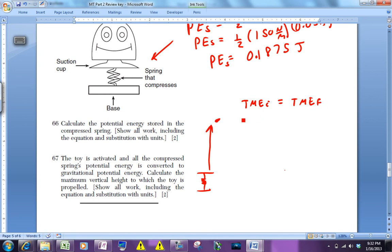Before all of that was potential energy in a spring, and afterwards all of that was potential energy due to gravity. So what we're saying is that 0.1875 joules of energy that had been stored in the spring is now going into MGH.